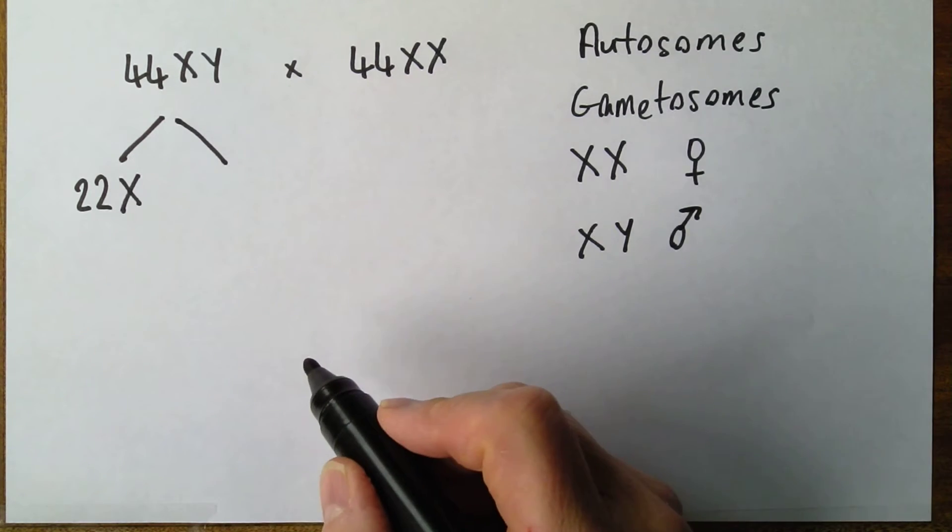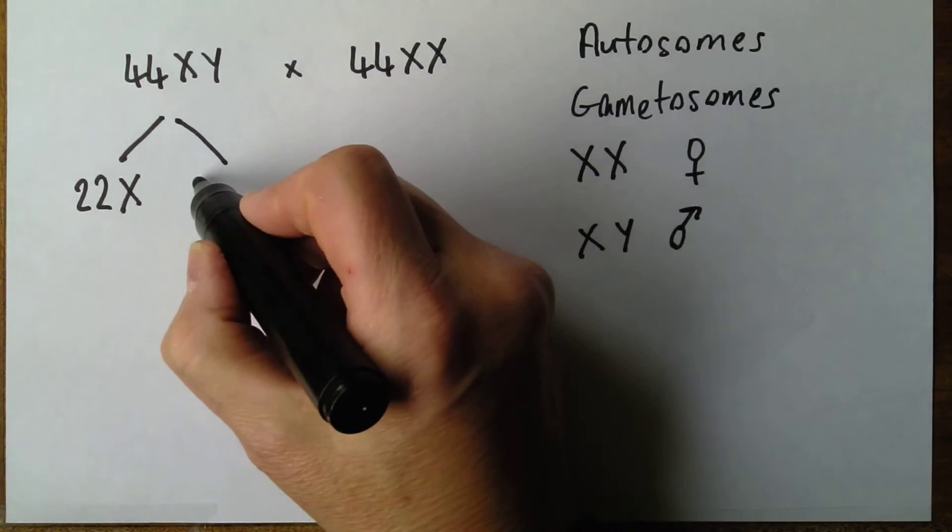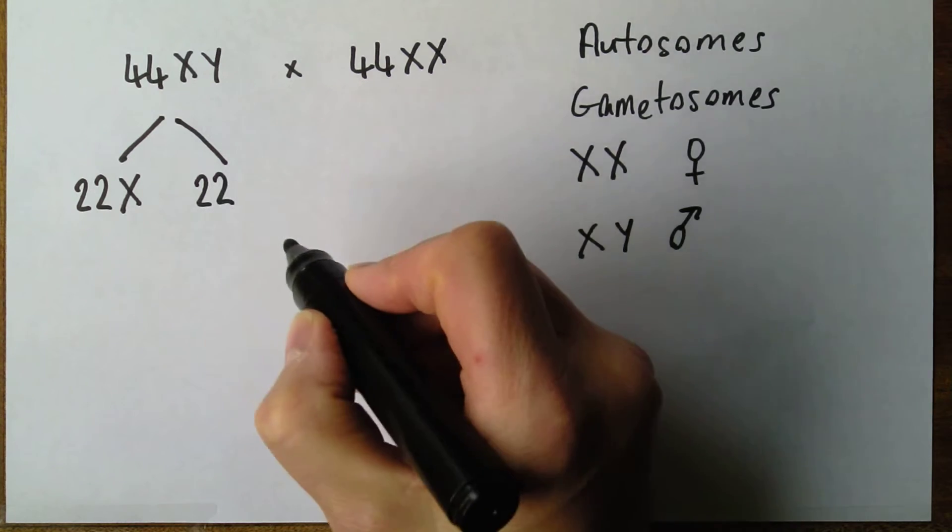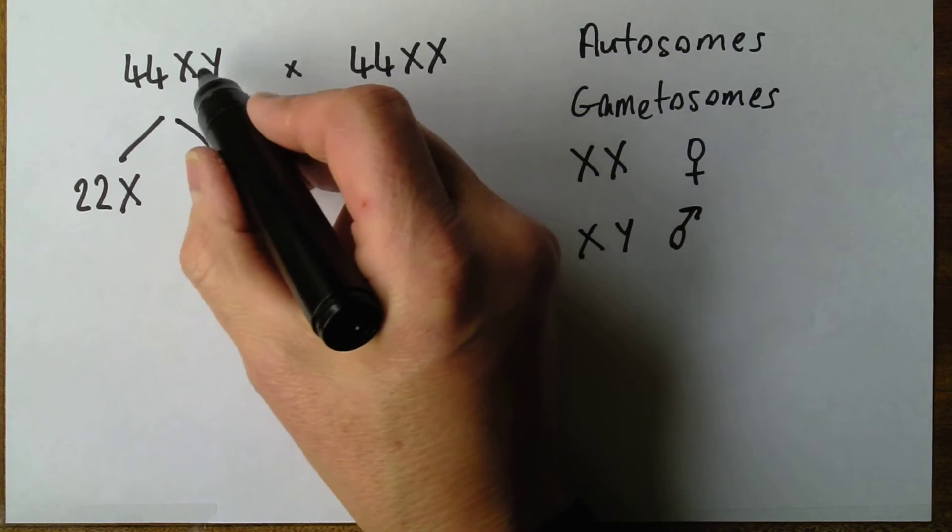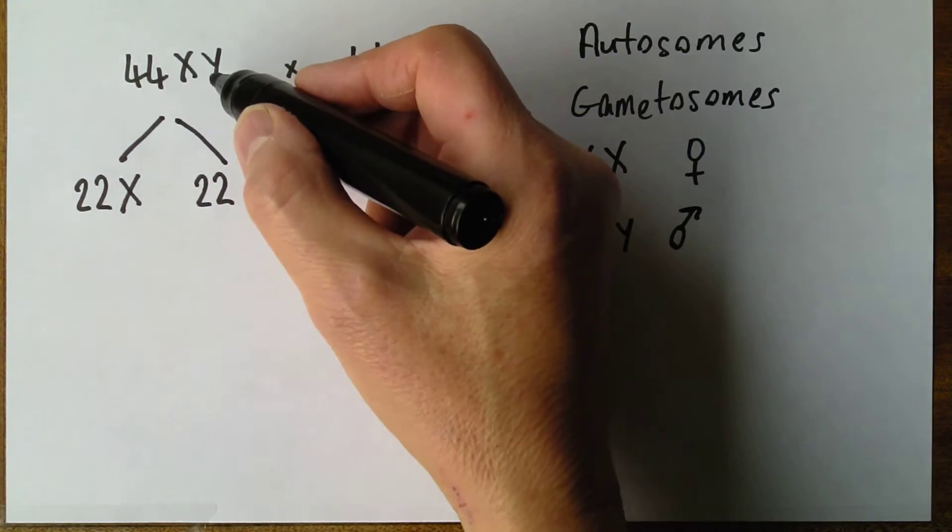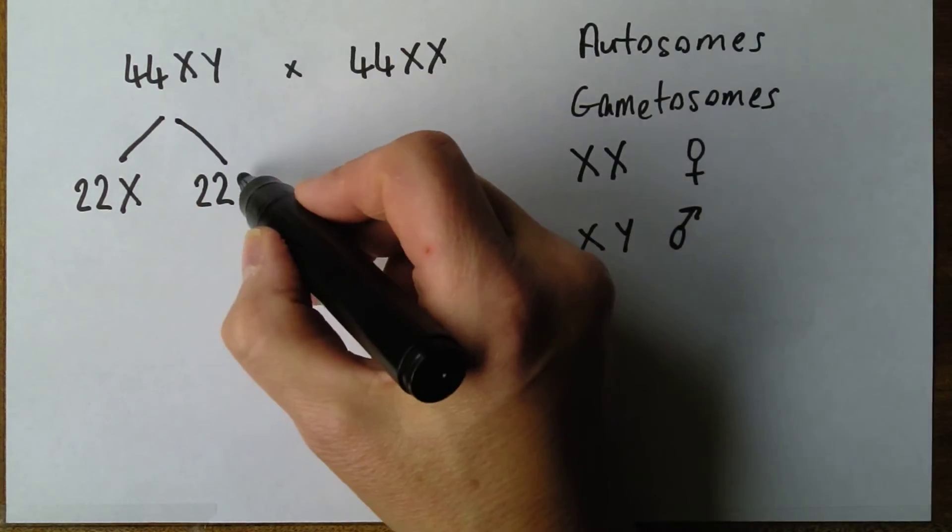In this case it's an X. And again, the other type of sperm, 22 and in this case the other one of the homologous pair. They're not really homologous because they're not quite the same, but they do form a pair, is going to be the Y.